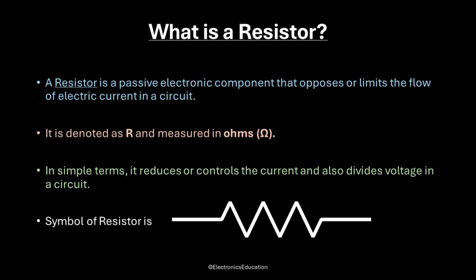Now, what is a resistor? A resistor is a passive electronic component that opposes or limits the flow of electric current in a circuit. It is denoted as R and measured in ohms. In simple terms, it reduces or controls the current and also divides voltage in a circuit. The symbol of a resistor is a zigzag line connected by two straight lines.